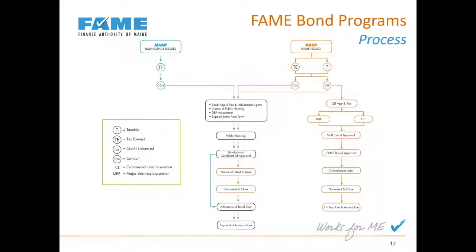During that 30-day window, bond counsel, FAME, the borrower, and the bank are all working together to get the documentation in final form and to actually close — typically on the 31st or 32nd day. As part of that closing, if the deal requires allocated bond cap, we issue it to ourselves if FAME is the issuer, or to the municipality if they're the issuer. For a municipal deal, the documentation is done at the municipality level rather than the FAME level, but the same general steps apply.